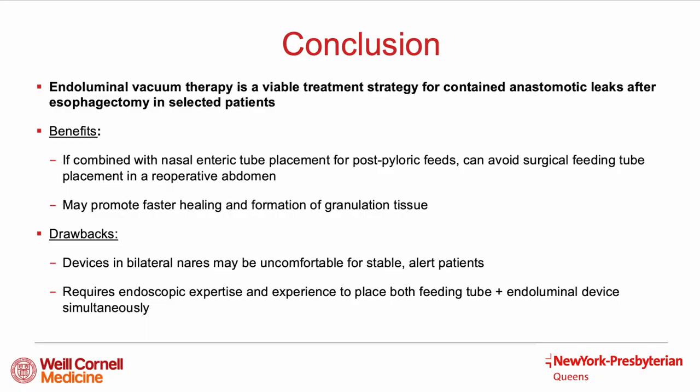This case report illustrates that endoluminal vacuum therapy is a viable treatment strategy for contained anastomotic leaks after esophagectomy in selected patients. There are multiple benefits to this strategy, most notably the avoidance of placing a surgical feeding tube. Additionally, vacuum therapy may promote faster healing through rapid formation of granulation tissue. However, there remain some drawbacks: placing devices in bilateral nares may be uncomfortable for stable, alert patients who do not remain intubated after the procedure. This method also requires endoscopic expertise and experience to place both a feeding tube and an endoluminal device simultaneously.